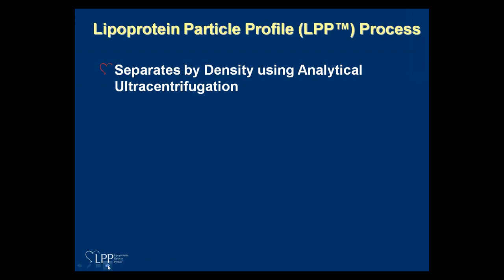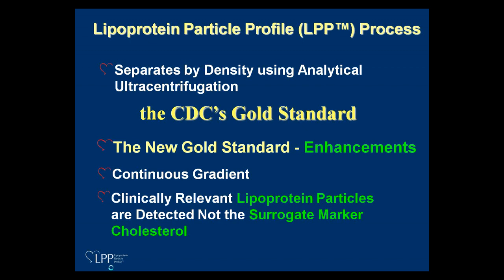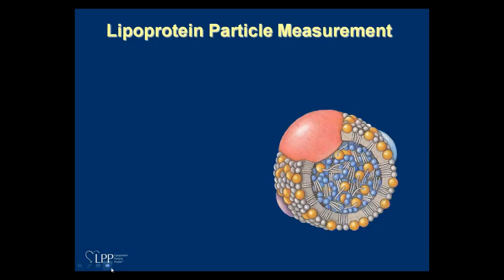The LPP process uses analytical ultracentrifugation — the CDC gold standard, and originally how LDL was determined. Our enhancements to the original gold standard include the ability to measure subfractions using a continuous gradient, which gives us better control. We now have a continuous gradient that separates LDLs and HDLs into many different subfractions. We measure the clinically relevant lipoprotein particles, not the surrogate marker cholesterol — which is now the industry consensus as being more predictive of risk.